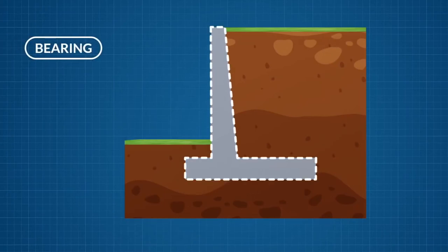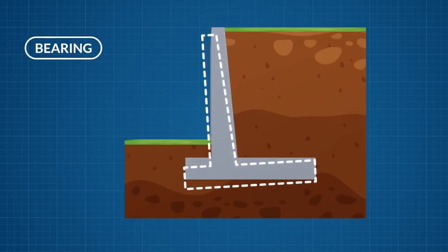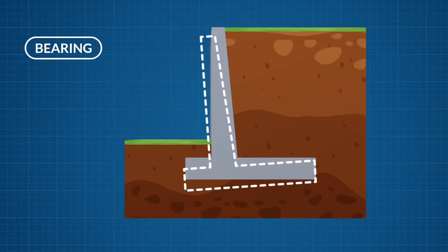The final type of failure considered is bearing failure. This bearing capacity is determined using the Terzaghi approach and more can be learnt in our video on bearing capacity. The length L is used to distribute the vertical reaction.